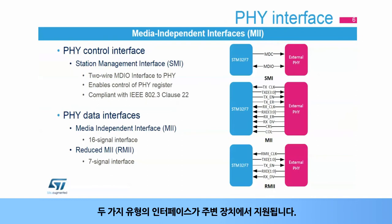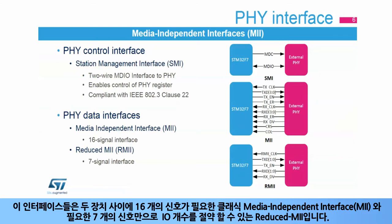Two types of interfaces are supported by the peripheral, both supporting full and half-duplex operations at 10 or 100 megabits per second. These interfaces are the classical media-independent interface, or MII, that requires 16 signals between both devices, and the reduced MII that requires only 7 signals, allowing I/O saving.